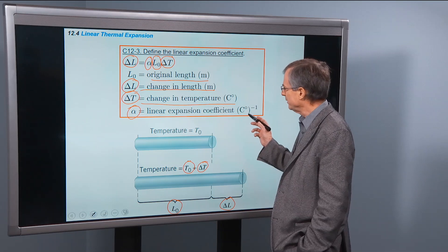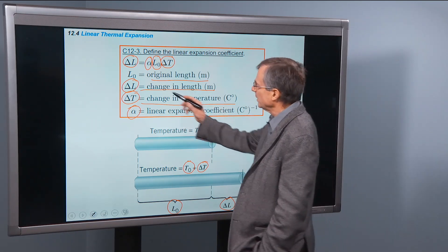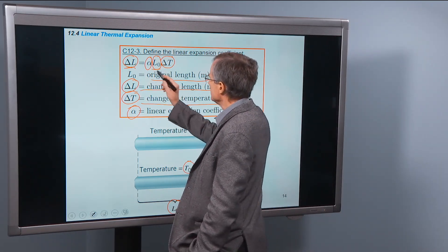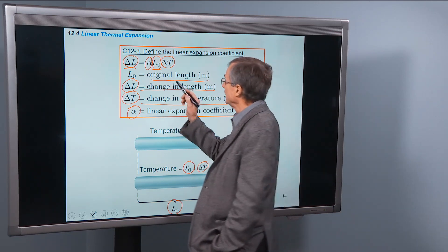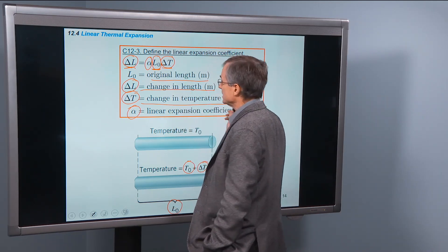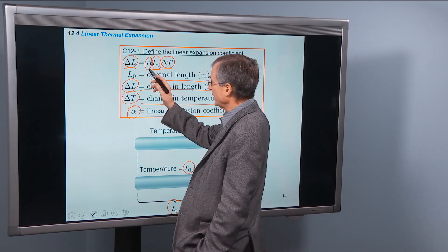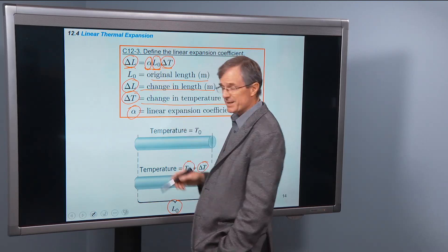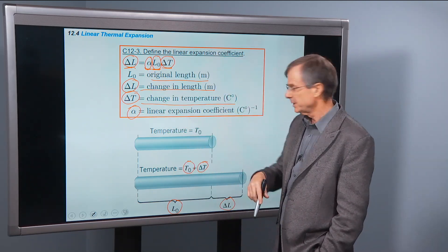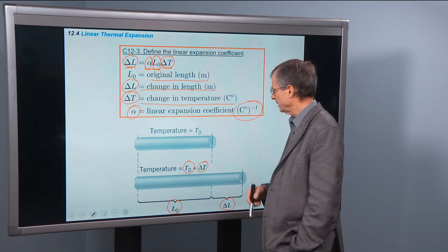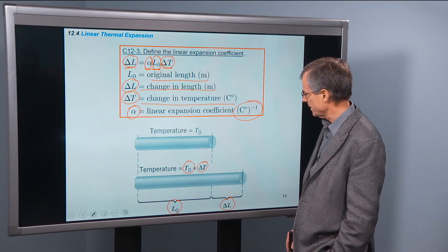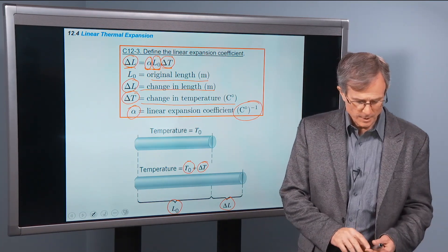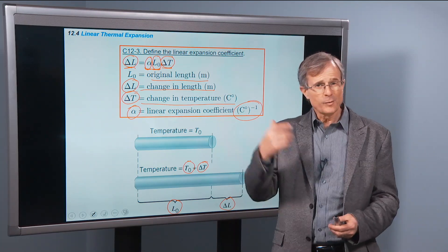And that's measured in inverse degrees Celsius. Why are they inverse degrees Celsius? Well, this has to be measured in length. This is measured in length, L0. Delta T is measured in degrees C. So if we want to get rid of the degrees C, then alpha has to be measured in 1 over degrees C. So that's the unit of the linear expansion coefficient. Delta L is alpha L0 delta T.